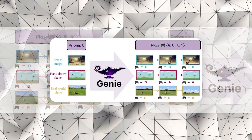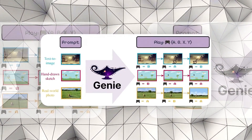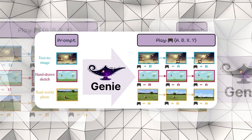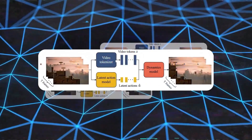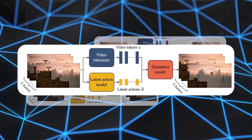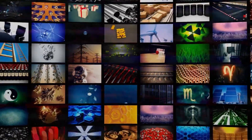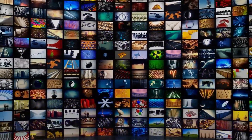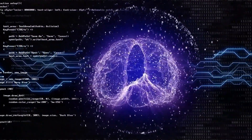The new model, called Genie — which stands for Generative Interactive Environments — can take a short description, a hand-drawn sketch, or a photo, and turn it into a playable video game in the style of classic 2D platformers like Super Mario Bros. Interactive, playable environments can be generated from a single image prompt.